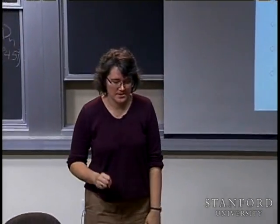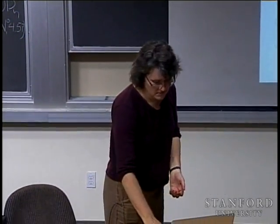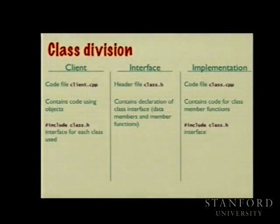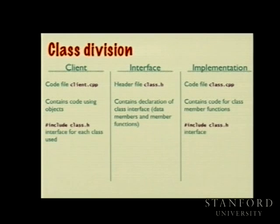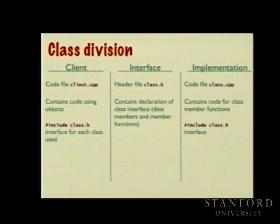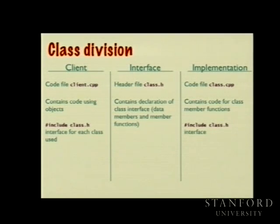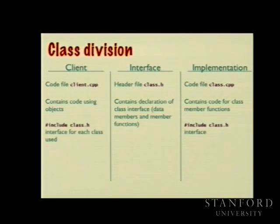Objects like lexicon, stack, and queue have been used in many ways as multipurpose tools. We have done a lot of client use of objects — a maze program or random writer program is code that creates objects, messages them, and asks them to do things on its behalf. It includes the class header (stack.h, queue.h, vector.h) based on what it needs. This is the only role we've played so far: the client.